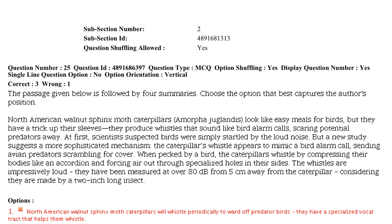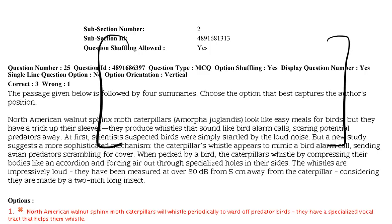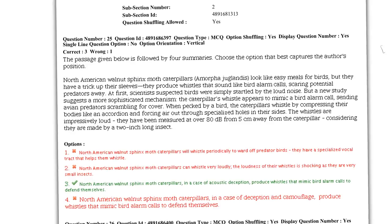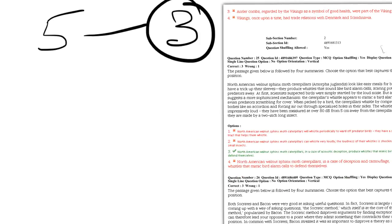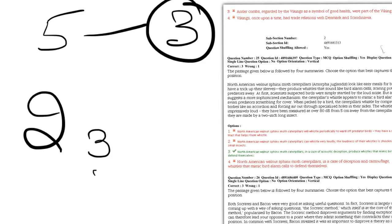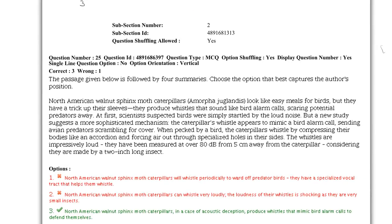The first thing I want to talk about today is SQUAT RCs — SQUAT means Small RCs. CAT has adopted a new pattern in which they give you small RCs as well. Last year there were five RCs — out of them, three were normal RCs with a huge passage of around 400–600 words, but there were two RCs with three questions each which were as small as this RC.